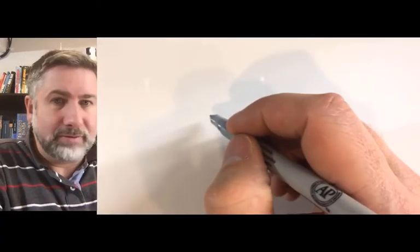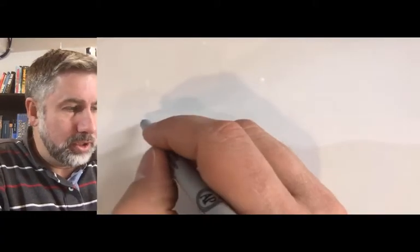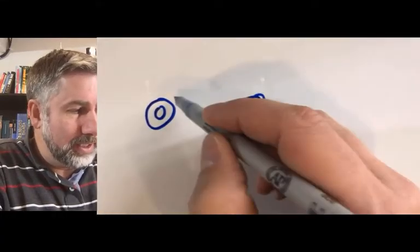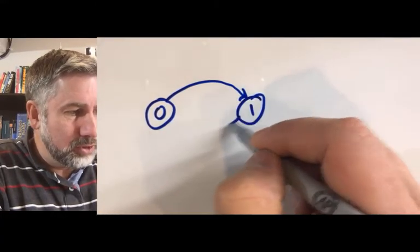Let me give you an example. If we were to have a very simple two-state machine where we had state 0 and state 1, we would have some transitions between these states.